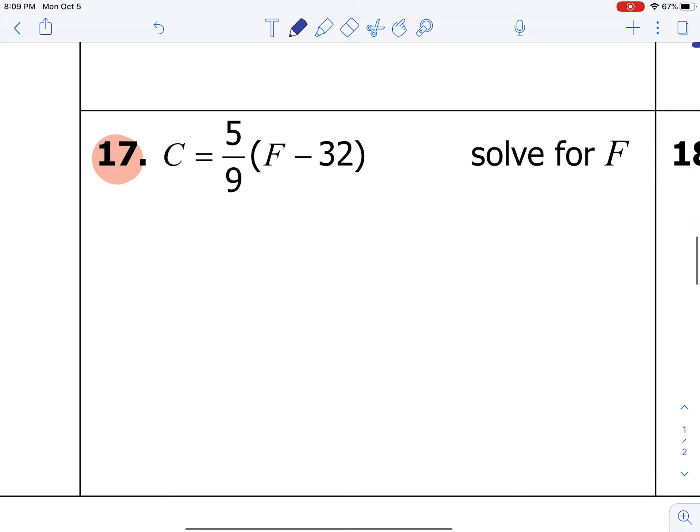The last one we're going to do together is number 17. So I'm going to rewrite it so I have a little bit more room to work with here. So let's solve for F. Where is F? F is right here. So the first thing that we need to get rid of is the 5 over 9. We need to get rid of the 5 over 9.